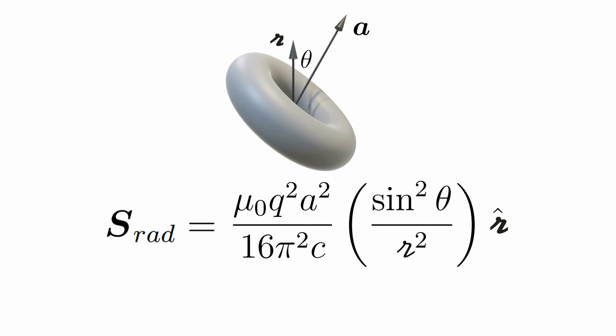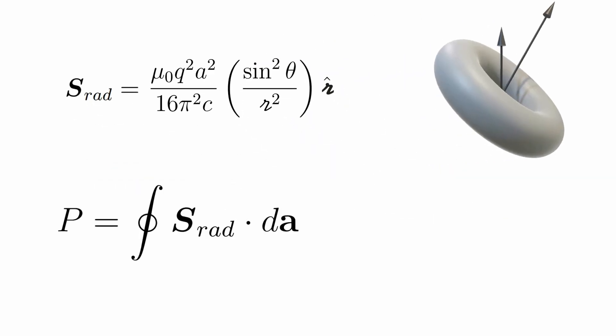Finally, let us now calculate the actual power that is being radiated by the accelerating charge. We integrate the Poynting vector throughout the surface area.